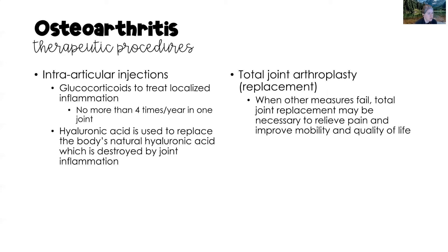As far as therapeutic procedures, there are really only two. The first is intraarticular injections, where glucocorticoids or hyaluronic acid is injected into the joint. Glucocorticoids treat localized inflammation and help with pain, but the client can have no more than four injections per year in one joint. Hyaluronic acid replaces the body's natural hyaluronic acid, which is destroyed by joint inflammation. The end result of osteoarthritis may be total joint arthroplasty — replacement of the joint — used when all other measures have failed, to relieve chronic pain and improve mobility and quality of life.